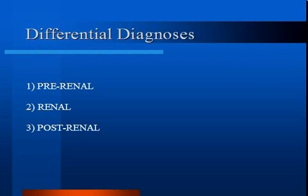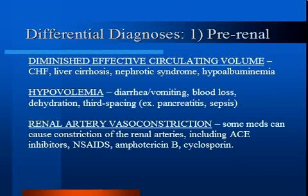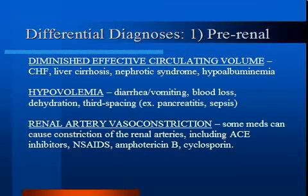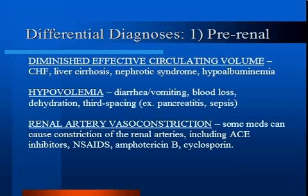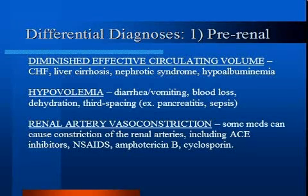Acute kidney injury can be classified into three main categories: pre-renal, renal, and post-renal. For pre-renal, there are three main things to consider, all of which result in decreased perfusion of the kidney. Diminished effective circulating volume occurs in states like CHF or liver cirrhosis. Causes of hypovolemia, like diarrhea, vomiting, blood loss, or dehydration, can also result in decreased perfusion. Some medications affect the ability of renal arteries to adjust, including ACE inhibitors and NSAIDs.